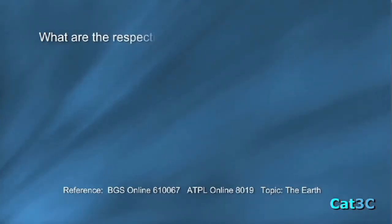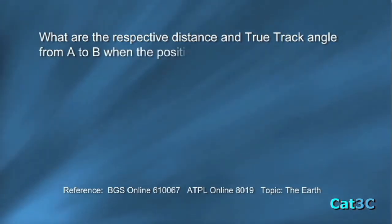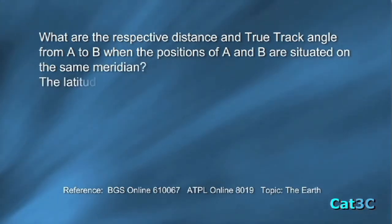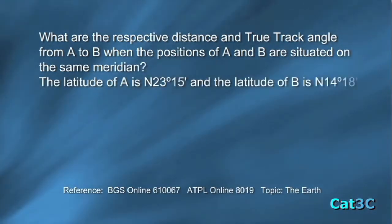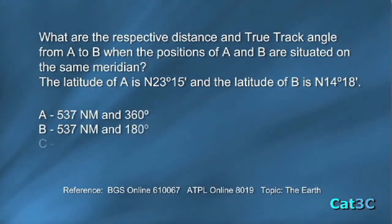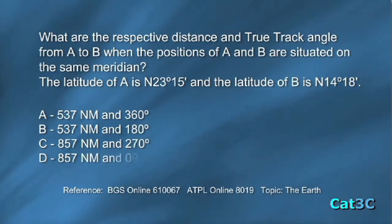What are the respective distance and true track angle from A to B when the positions of A and B are situated on the same meridian? The latitude of A is north 23 degrees 15 minutes and the latitude of B is north 14 degrees 18 minutes. The options are A: 537 nautical miles and 360 degrees, B: 537 nautical miles and 180 degrees, or D: 857 nautical miles and 90 degrees.